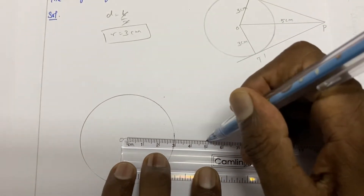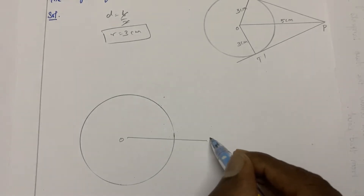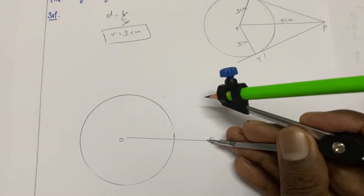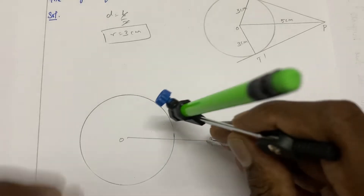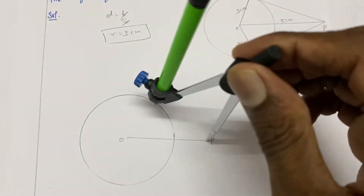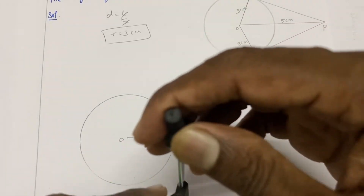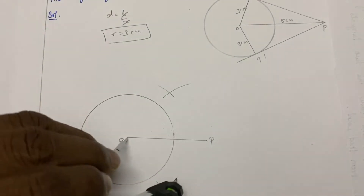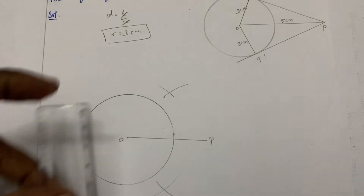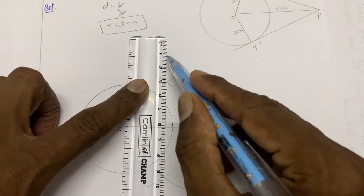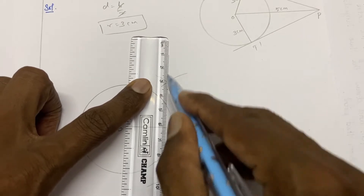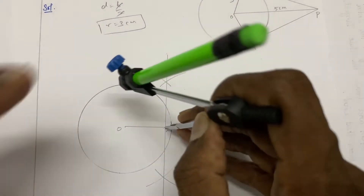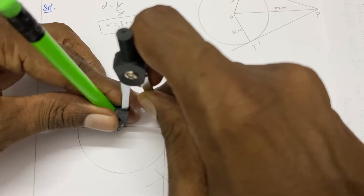We will add point P at 5 centimeters from the center. Next, we drop a bisector on the line segment OP. Find the bisector and draw the perpendicular bisector of OP.